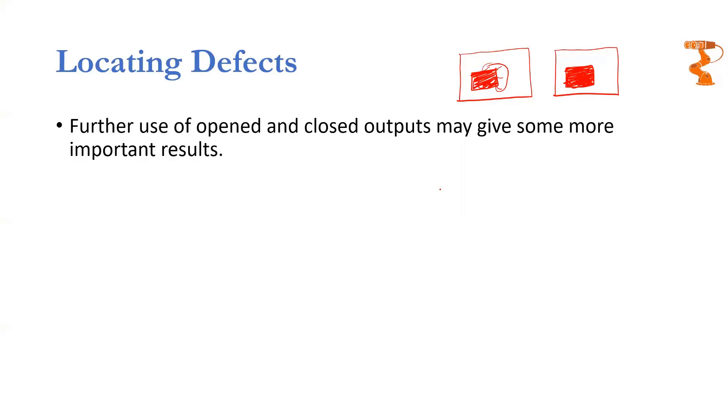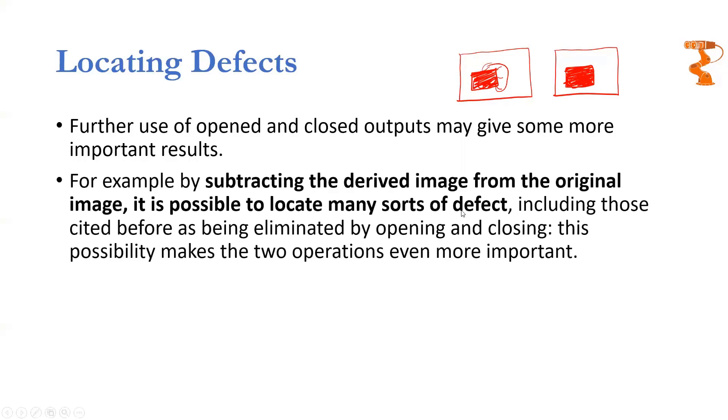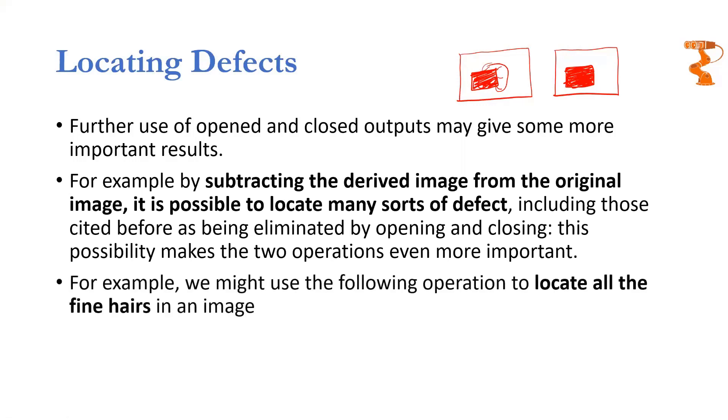So this is what a top hat operator is. It is a very easy one. I have described this thing in textual form over here, so you can go through it. This equation describes what we just did. You were subtracting the original image, which was this one, image A, minus this one, which was A opened with B.